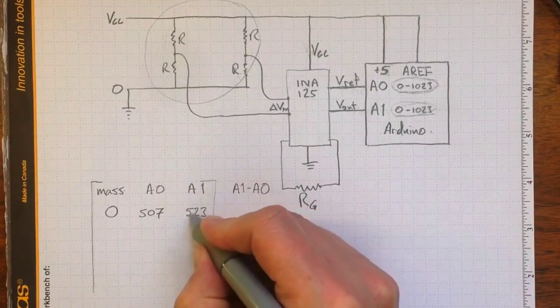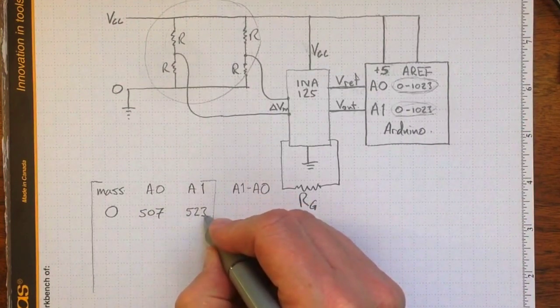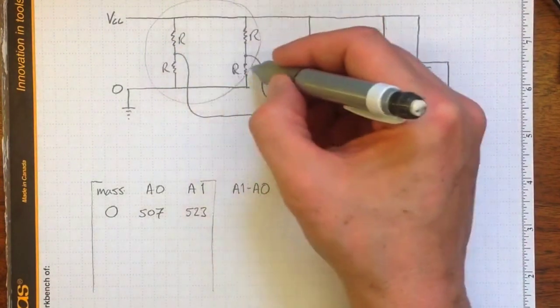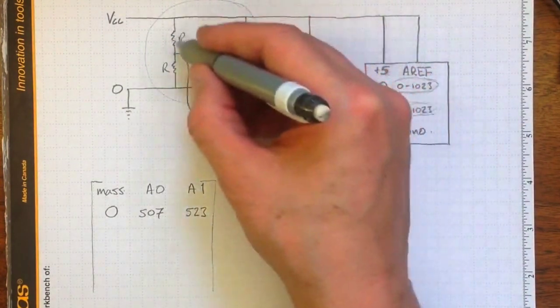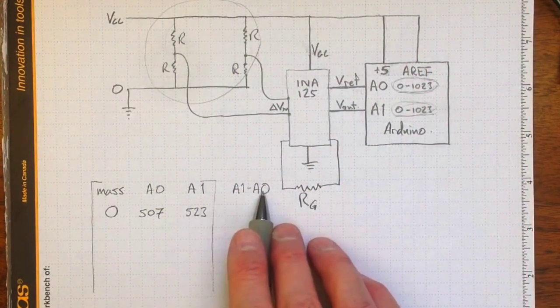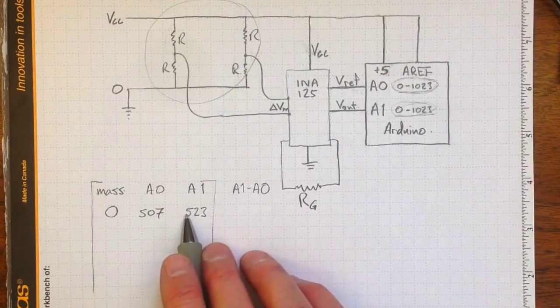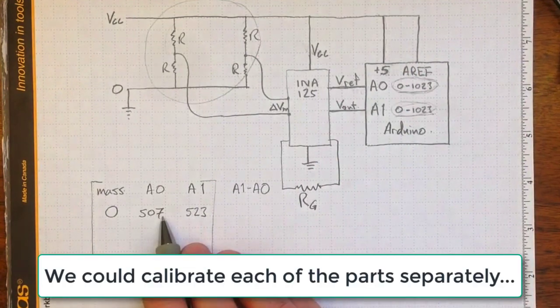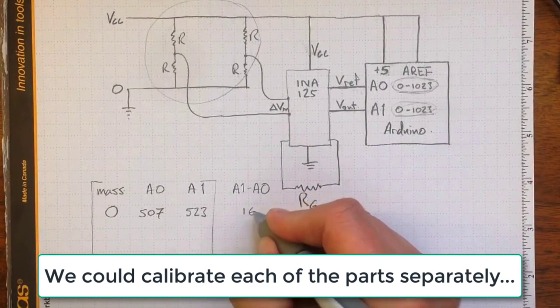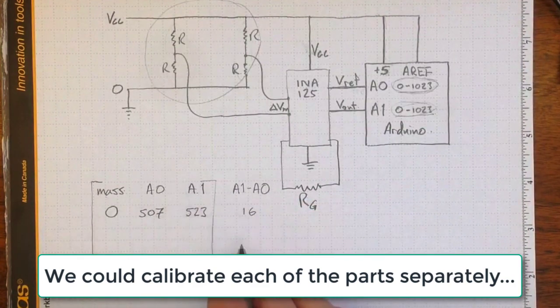It could just as easily be lower than the A0 value. This is the offset, the imbalance in the bridge, the differences in these resistors when there's no load applied to the beam. So we find that A1 minus A0, 523 minus 507 is 16 when the mass is equal to 0.